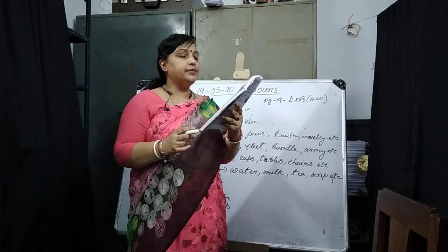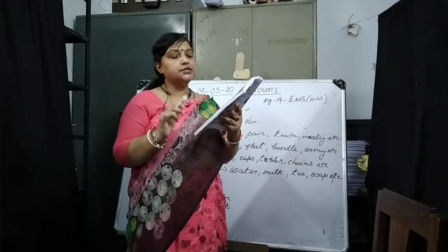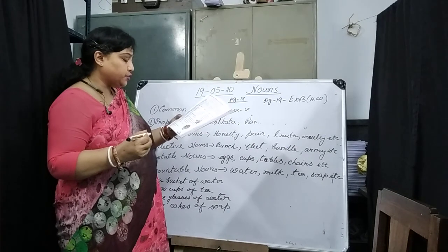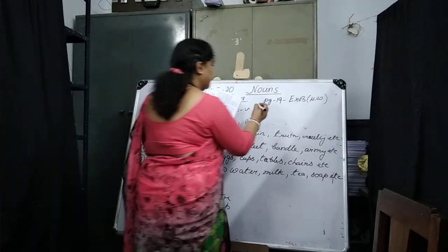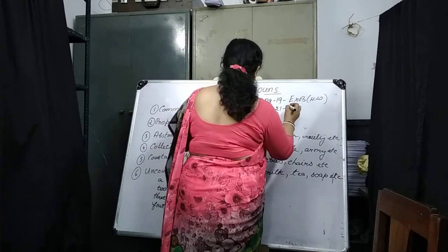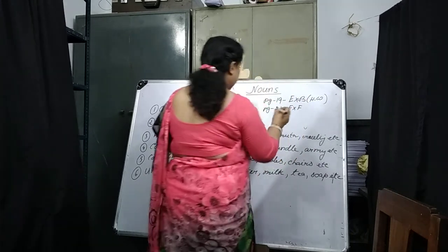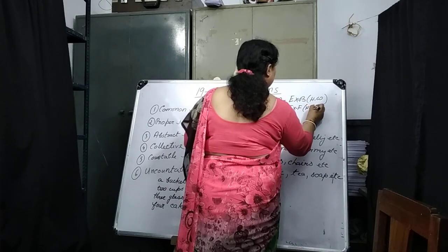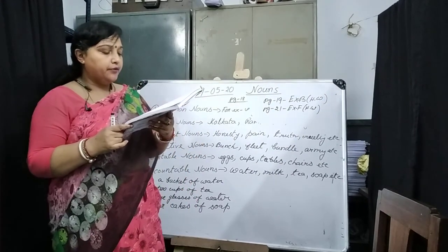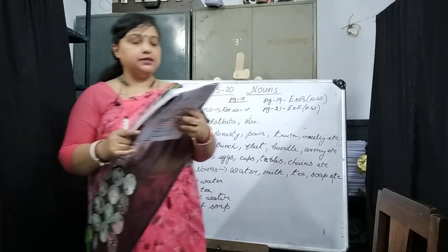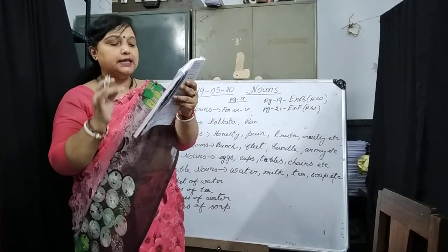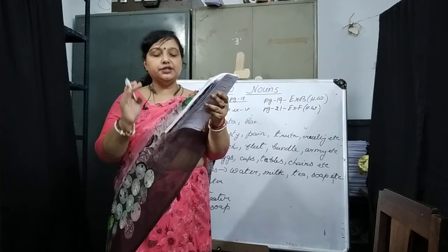Exercise F, number 8: form nouns by adding suffixes — dom, e, t, ment, th, y, ness, or ty — to the words given below. This will be your homework. When you construct exercise F, you will get words like: sweetness, reality, equality, treatment, honesty, freedom, formality, foolishness, growth, cruelty.